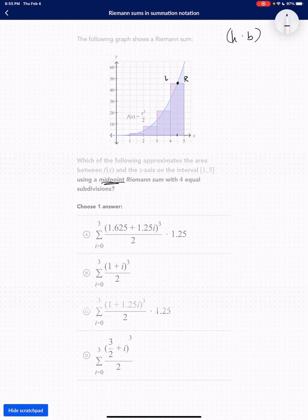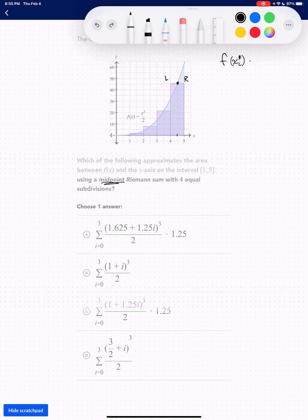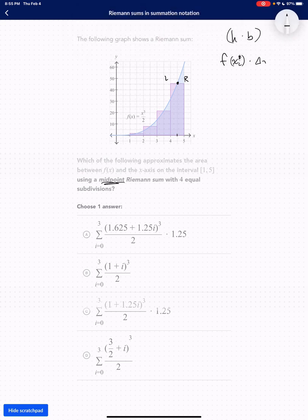But instead of saying height and base, we're going to say f of x sub i times not b, but delta x.